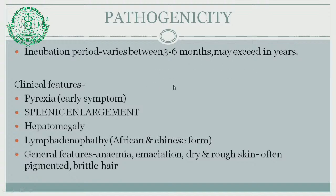The incubation period for the disease varies between 3 to 6 months but may exceed up to years. The clinical features include pyrexia as an early symptom, but the most prominent feature is splenic enlargement. That is why it is called visceral leishmaniasis — the viscera or internal organs of the body are affected. There is hepatomegaly as well, but the prominent enlargement is in the spleen. Lymphadenopathy is also present.